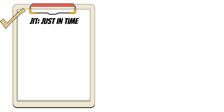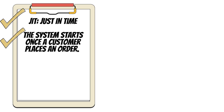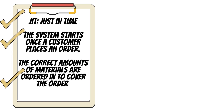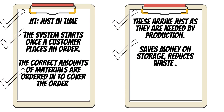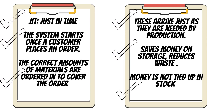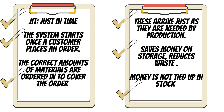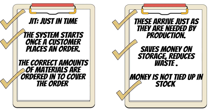So what are the key takeaways of this video? JIT stands for just in time. The system starts once a customer places an order. The correct amount of materials are ordered to cover that order and these arrive just as they are needed in production. This saves money on storage, reduces waste, and ensures that no money is wasted producing stock that will remain unsold. Money is not tied up in stock as they tend to have low cost levels of materials and products that have already been produced.